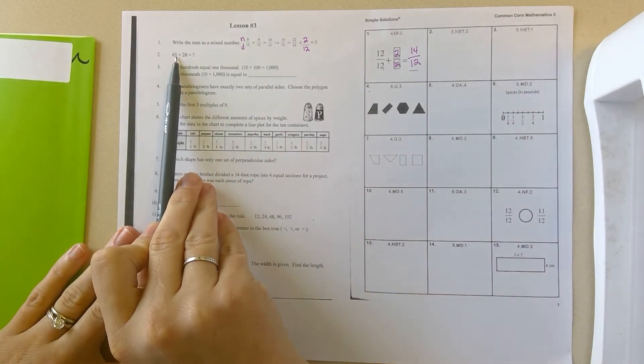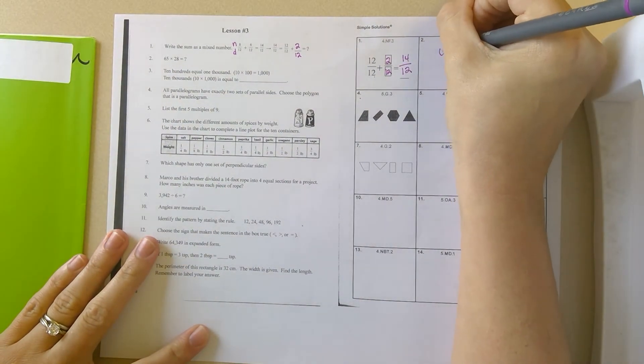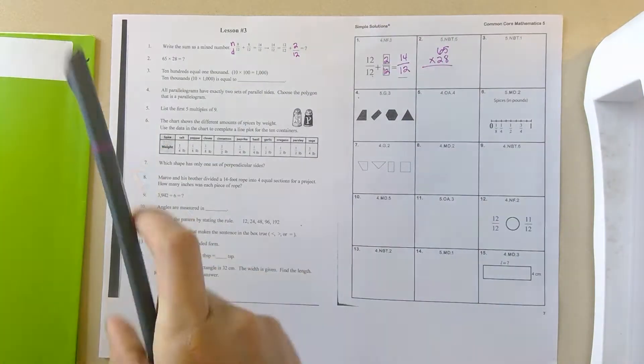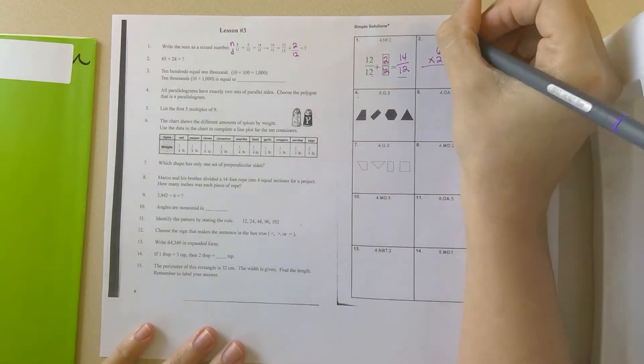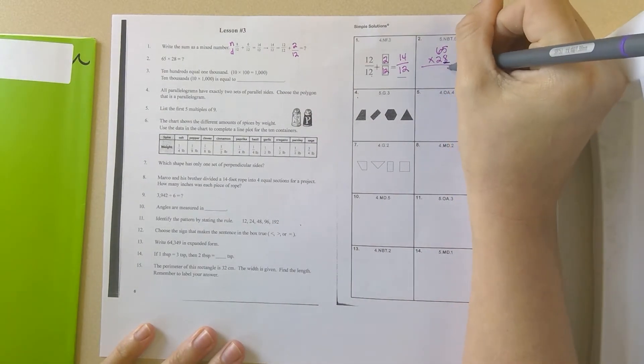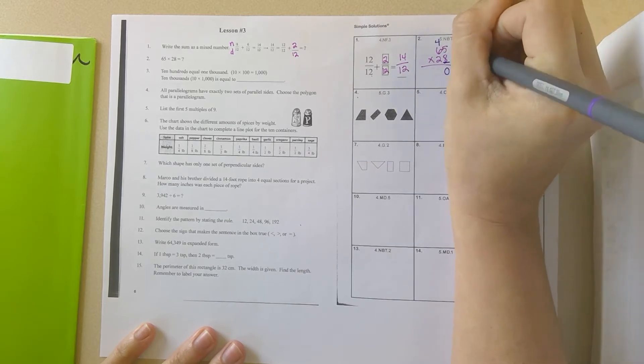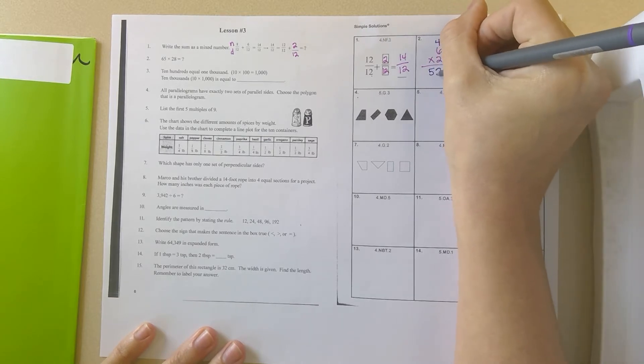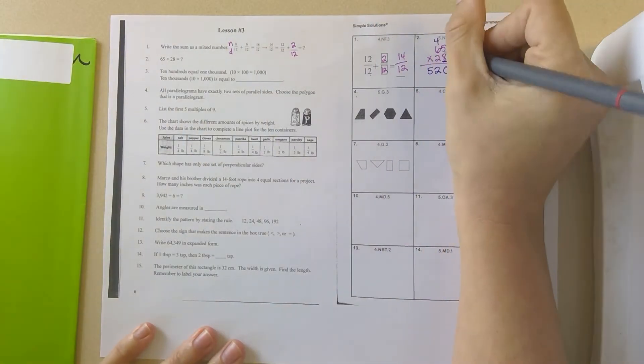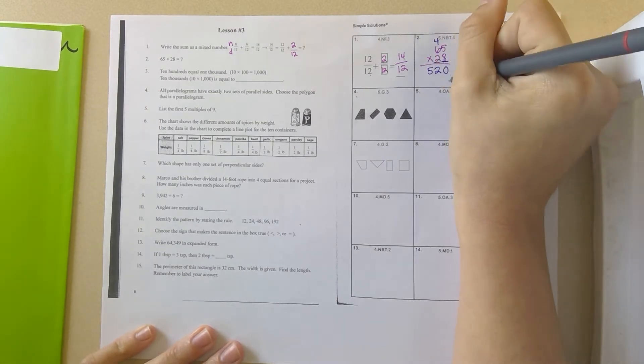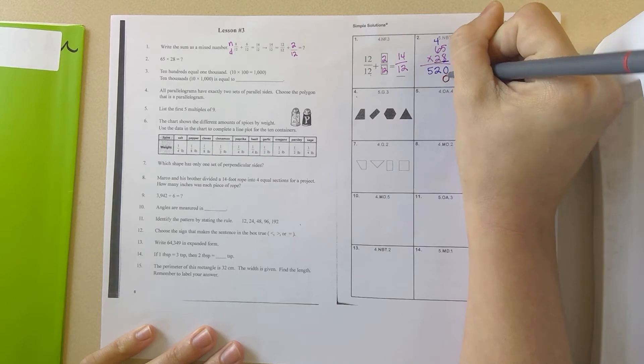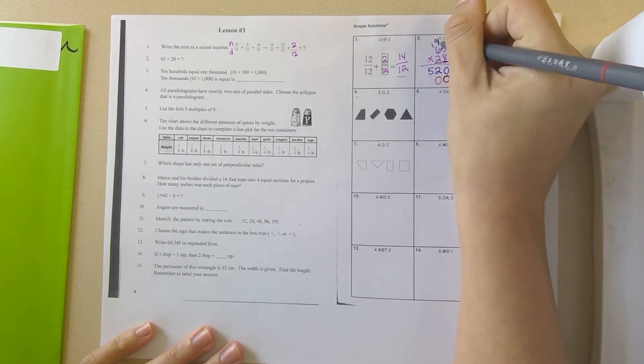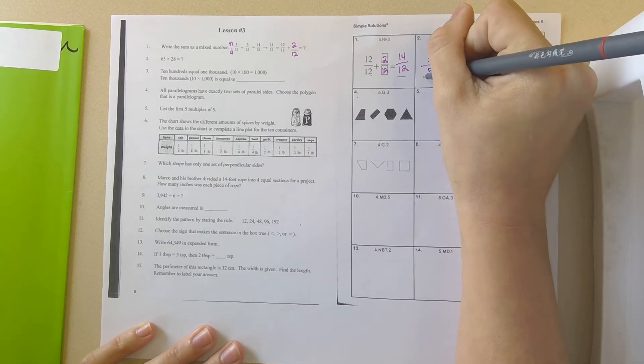Number 2. 65 times 28. We're going to write that vertically. So 65 times 28. I'm going to use a different colored pen so you can kind of see the way I'm traveling. So we're going to start here at the 8. 5 times 8 is 40. 6 times 8 is 48 plus that 4, which is 52. I'm going to switch my colors. I'm now going to multiply with this 2. 2 times 5 is 10. I have to put that place value. I almost forgot, guys. Can't forget that place value. 2 times 5 is 10. I'm not looking at that anymore. 6 times 2 is 12 plus that 1 is 13.